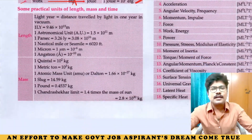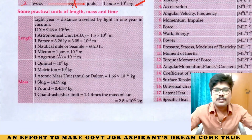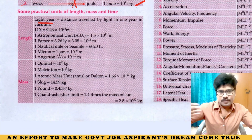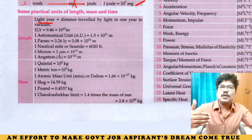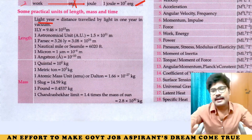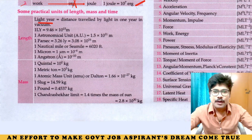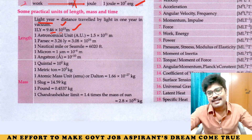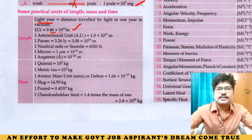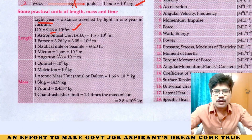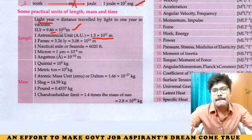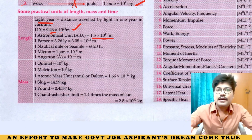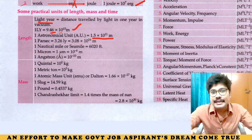Among the fundamental and derived units, there are also some practical units that you need to remember. Light year — the distance light travels in one year in vacuum. 1 light year equals 9.46 into 10 to the power of 15 meters. 1 astronomical unit equals 1.5 into 10 to the power of 11 meters.